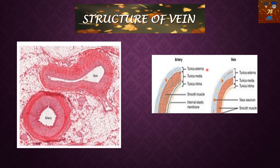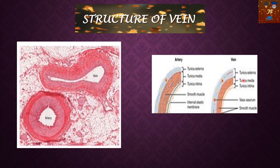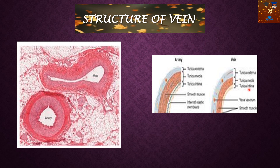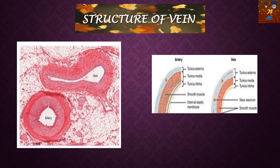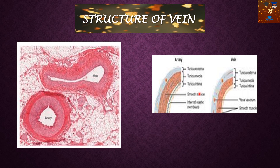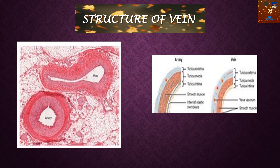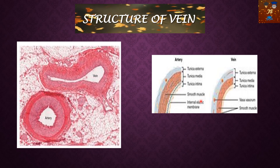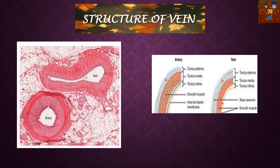You can see the tunica adventitia, which is the external or outer portion, then the tunica media, which is the middle part, and the tunica intima, which is the internal part. Smooth muscle is present in both cases — you can see the smooth muscle in the artery and the smooth muscle in the vein. The elastic properties are also the same in both the artery and the vein.